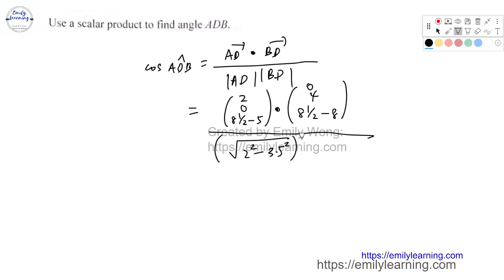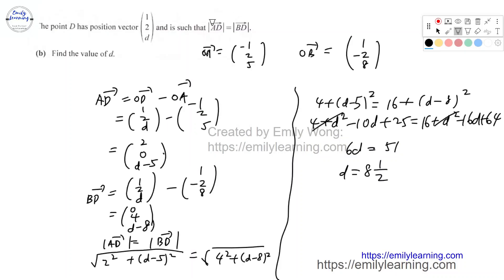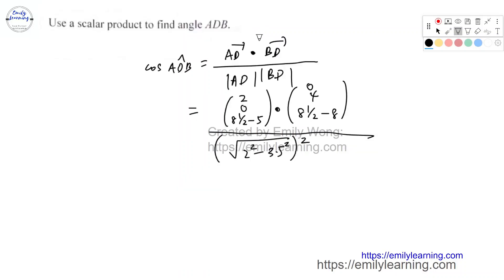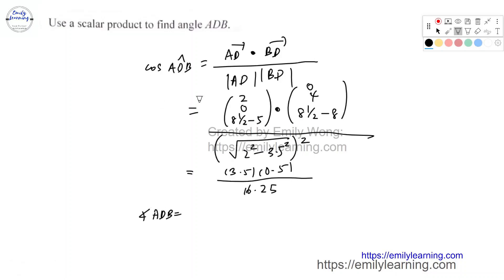Since |AD| = |BD|, the denominator is |AD|². The dot product AD · BD = (2)(0) + (0)(4) + (3.5)(0.5) = 1.75. So cos(ADB) = 1.75 / 16.25. Therefore angle ADB = cos⁻¹(1.75/16.25) = 83.817°, which rounds to 83.8° to one decimal place.